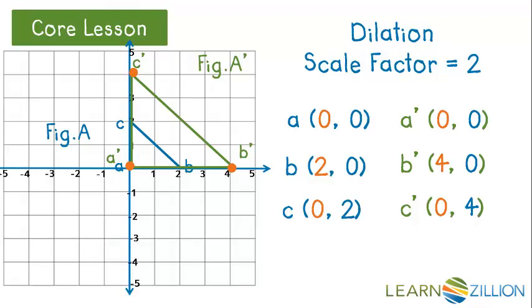We can see that this image is the same shape but a different size than the pre-image. So we can say it is similar to, but not congruent to, its pre-image.